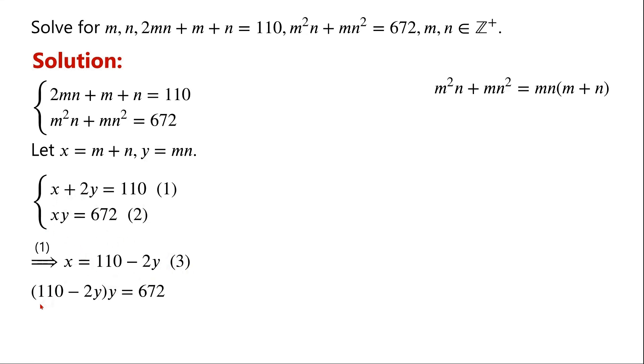By substituting equation 3 in equation 2, we get 110 minus 2Y times Y equals 672. By expanding and rearranging the equation, we get 2Y squared minus 110Y plus 672 equals 0.